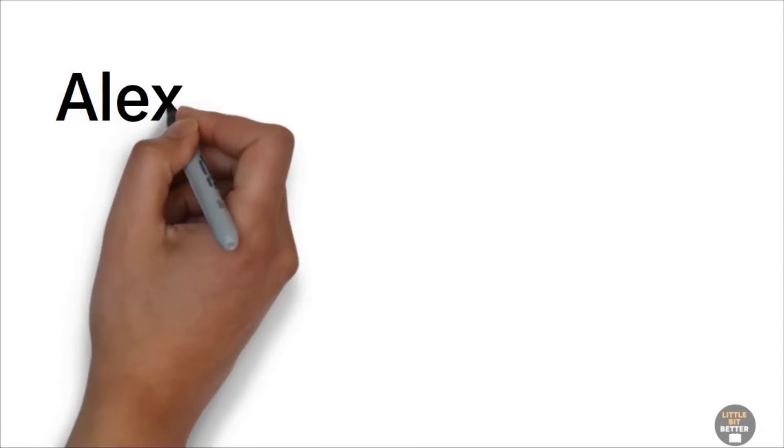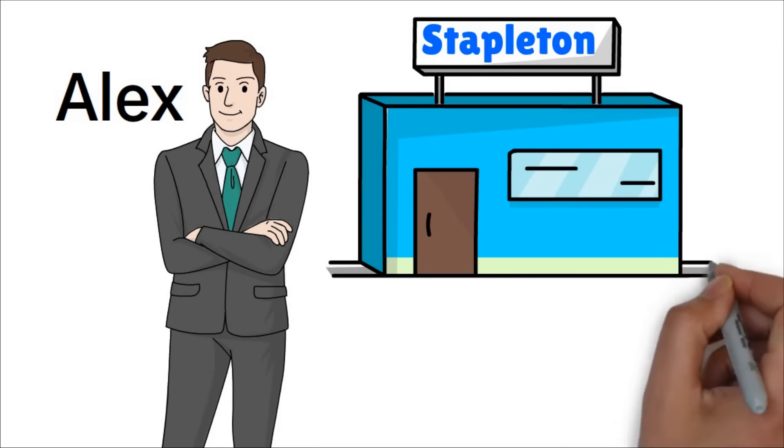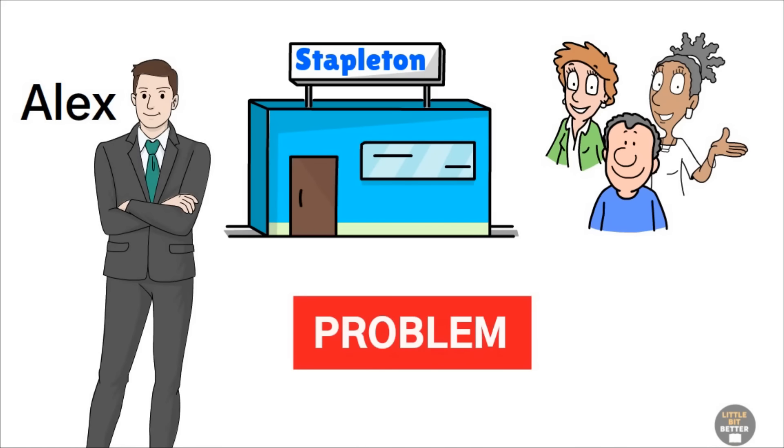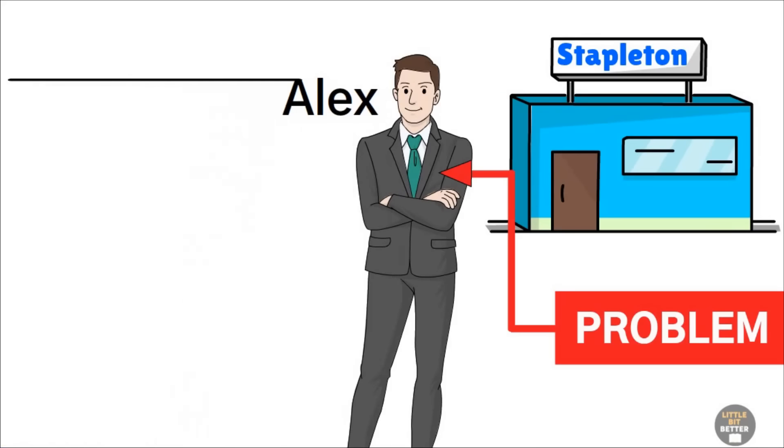Meet Alex. Alex owns a company called the Stapleton Agency. He offers lots of different advertising services and has plenty of clients. But there's a big problem. Alex is doing almost all the work himself because his clients only want to deal with him.